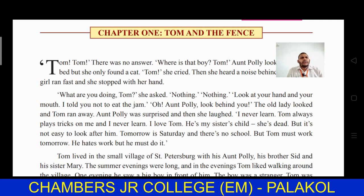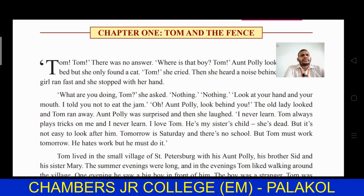That's why Aunt Polly wants to put him in discipline. Aunt Polly was surprised and then she laughed. The lady looked around and Tom ran away — she had turned back to check whether what Tom said was true, but there was no one there. Meanwhile, Tom slipped away from that place. Thus Tom played a trick on Aunt Polly. She accepts: 'I never learned — Tom always plays tricks on me.'